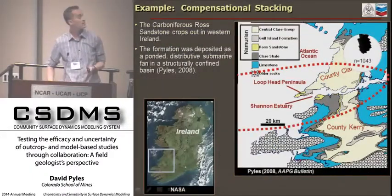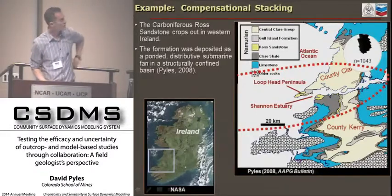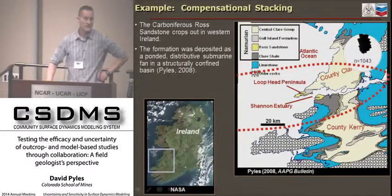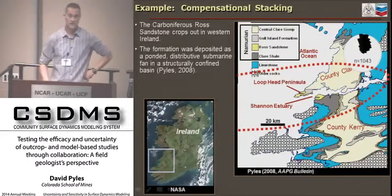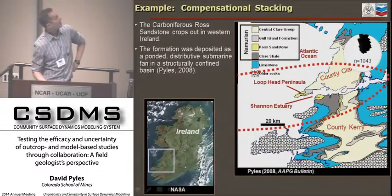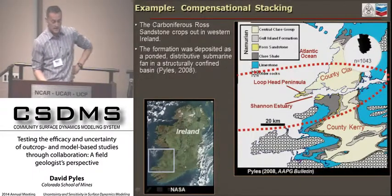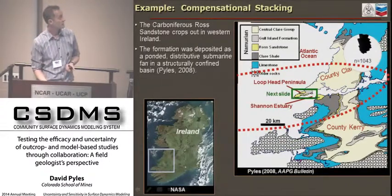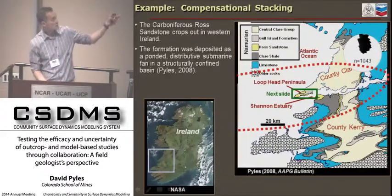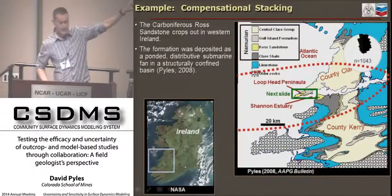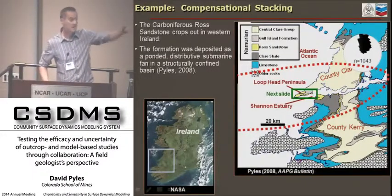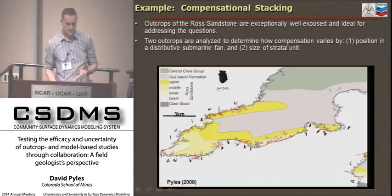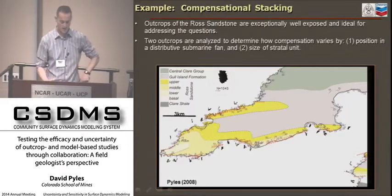I'd like to take you to Ireland and the Raw Sandstone system, which is about 318 million years old—Namurian in age, or Pennsylvanian if you're American. The formation was deposited within a ponded distributive submarine fan. We've done a lot of work there over the past several years. Zooming into the geologic map, the area broadly in yellow is where the Raw Sandstone crops out on the peninsula.